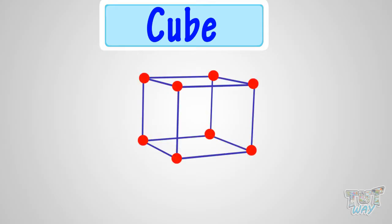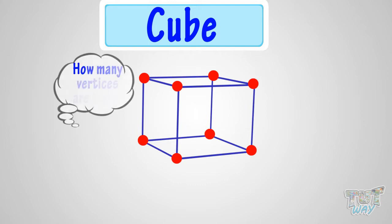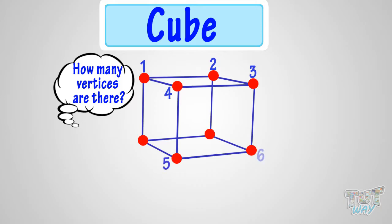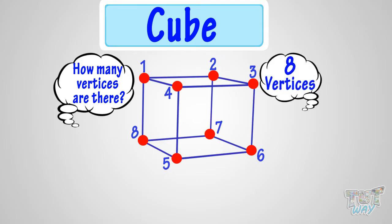So let's count its vertices. 1, 2, 3, 4, 5, 6, 7, 8! So a cube has 8 vertices.